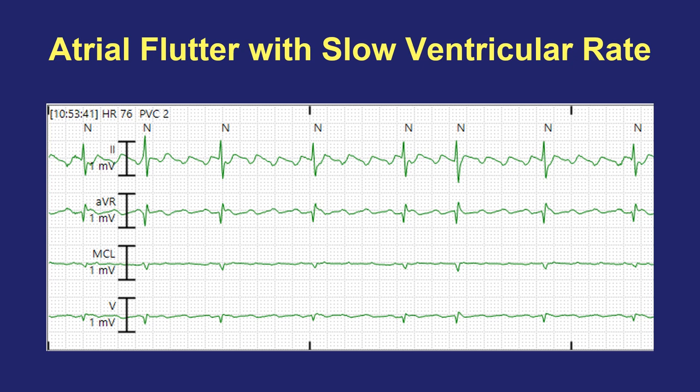When somebody has atrial flutter on telemetry with a slow ventricular response, the diagnosis is pretty simple. You can see the flutter waves or P waves — if it's atrial tachycardia — which greatly outnumber the QRS complexes and are therefore easily seen. However, a flutter wave or P wave that falls on a QRS T-wave complex may be somewhat invisible because it's obscured. This isn't a big deal if you have more P waves than QRSs, but in a two-to-one tachycardia, you might miss half the P waves.